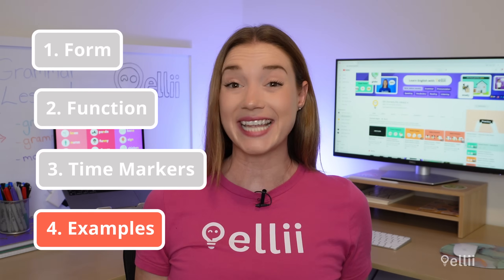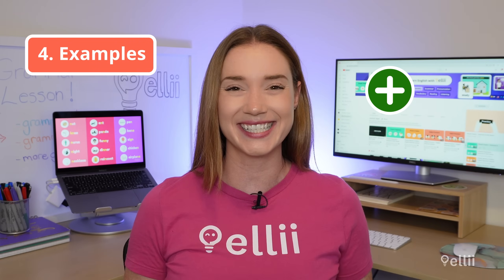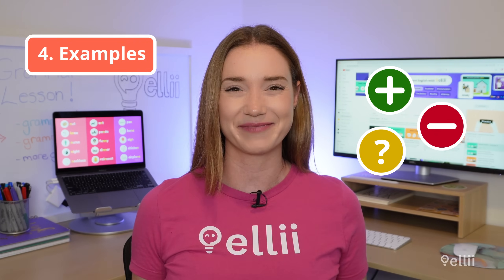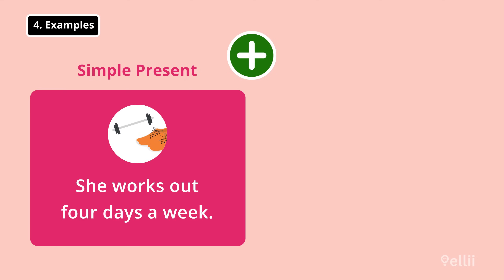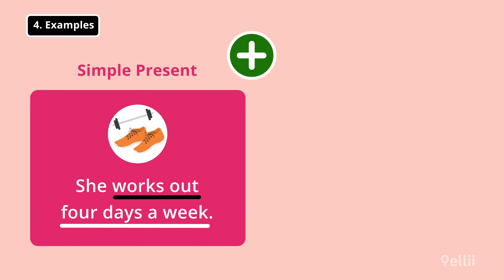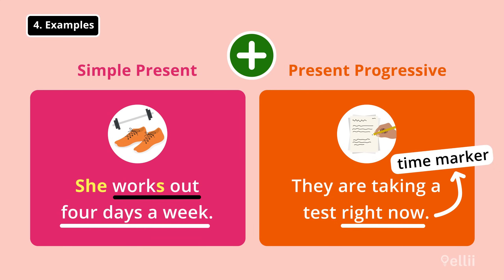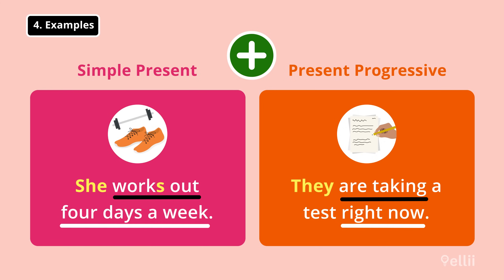Now let's look at some examples of these tenses in affirmative sentences, negative sentences, and questions. First, affirmative sentences: She works out four days a week. The time marker is four days a week, which is a repeated action, so we need the simple present verb works out — did you notice the S ending? We need it when the subject is she. They are taking a test right now. With the time marker right now we need the present progressive verb tense, since it's a continuing action. The subject they means the be verb becomes are, and the verb take gets an ing ending.